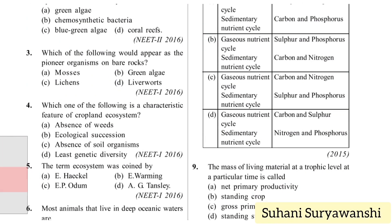Which of the following would appear as the pioneer organism on bare rocks? Options: mosses, green alga, lichens, and liverworts. The correct answer will be lichens.